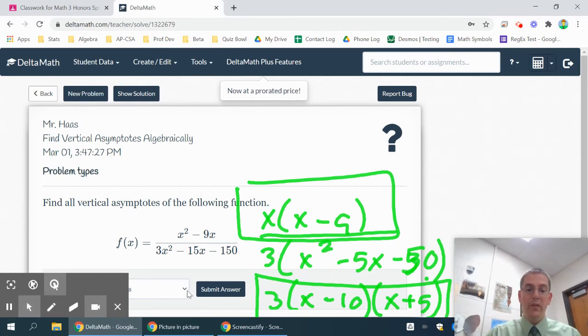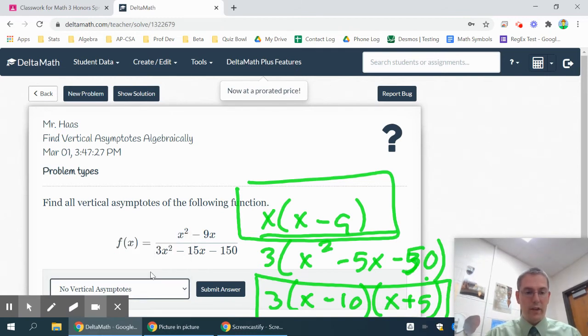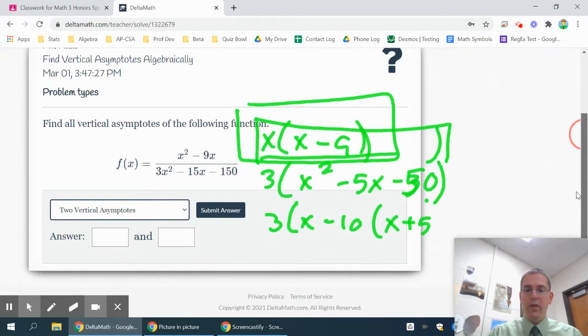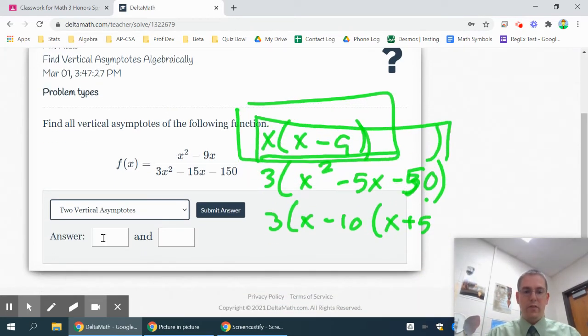If one of them did cancel, it would be a hole, and I would only have one vertical asymptote. But since neither one of those cancel, both of those factors will make a vertical asymptote.